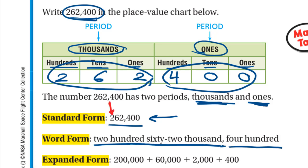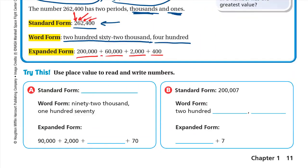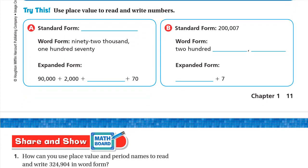To write it in expanded form, we write the place value of each digit. The 2 is at the hundred thousands place, so I write 200,000. The 6 is at the ten thousands place, so I write 60,000. The 2 is at thousands, so it's 2,000. The 4 is at hundreds, so it's 400. We have zeros at tens and ones. So: 200,000 + 60,000 + 2,000 + 400 is the expanded form.